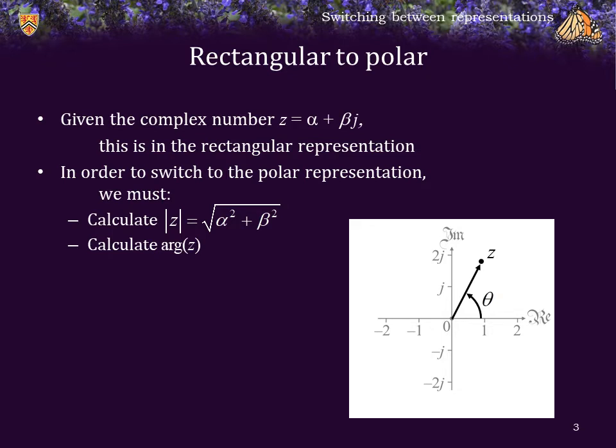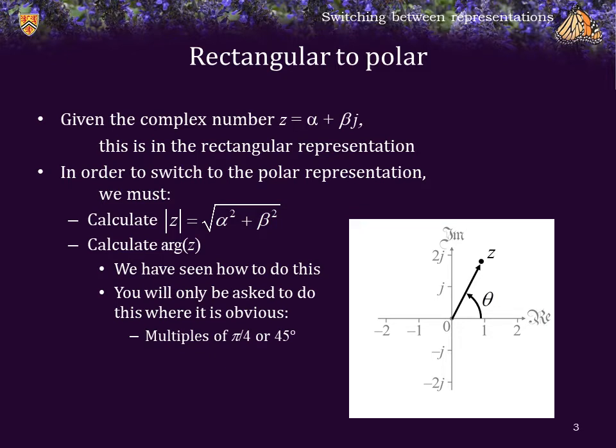Next, we have to calculate the argument of z to get the value theta. We've already seen how to do this. However, in this course, you will only ever be asked to calculate the argument when it is obvious. For example, pi over 4, or 45 degrees, or multiples thereof. So, for example, the argument of 1 plus j is 45 degrees, or pi by 4.